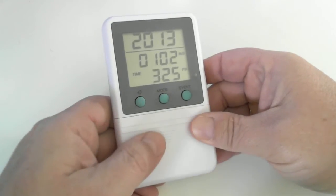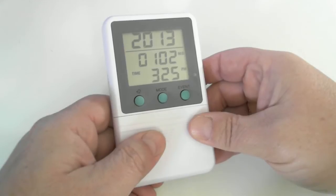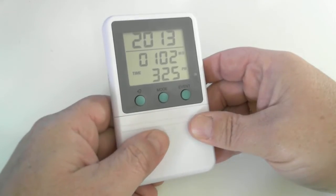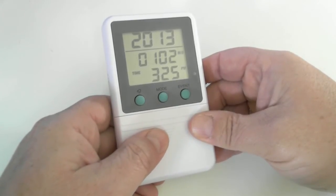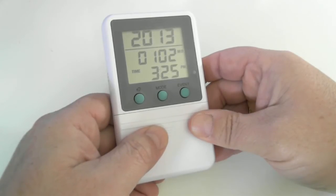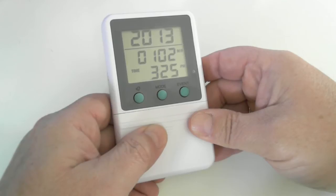Press mode again and we are into the third and last display which at the top is showing the year. The center is showing the month and day and at the bottom is showing the time.